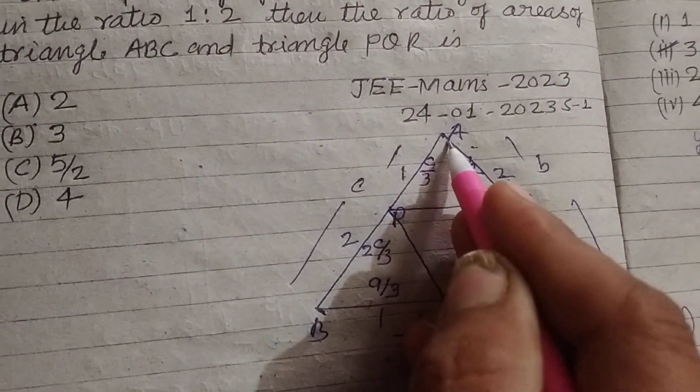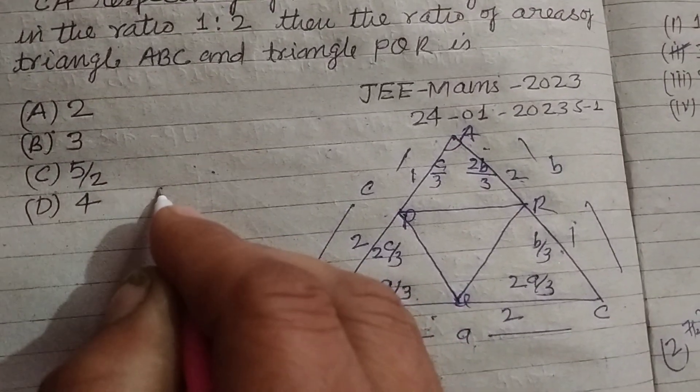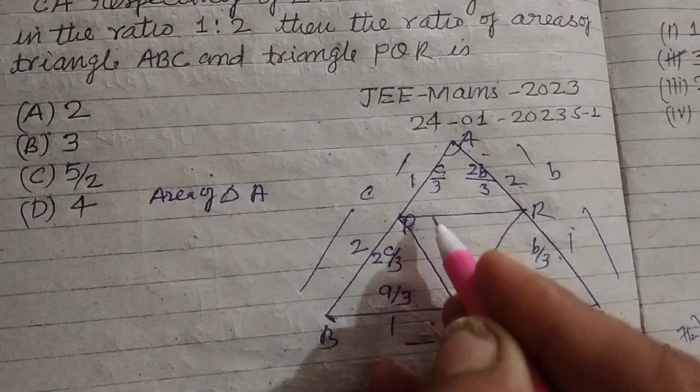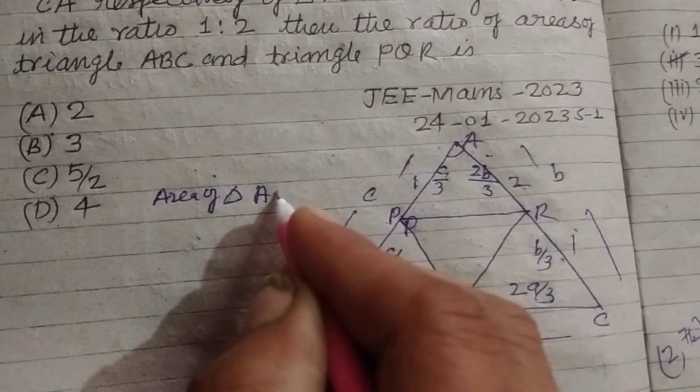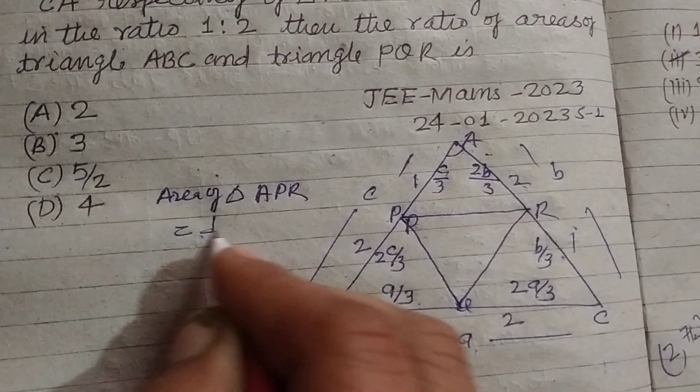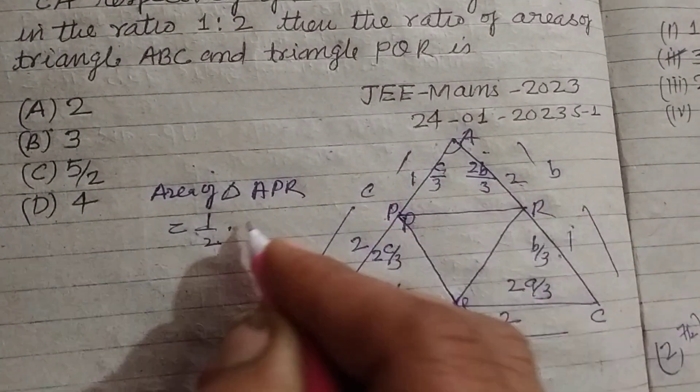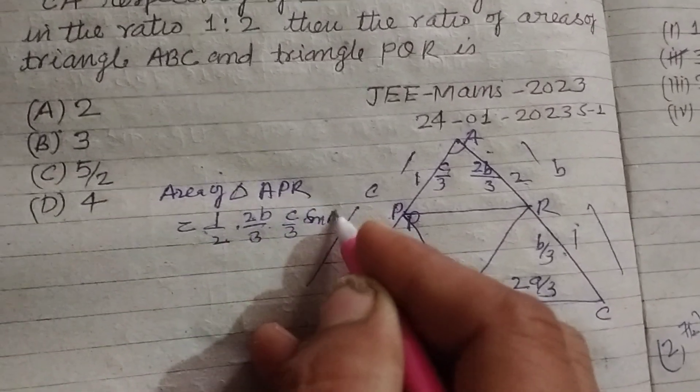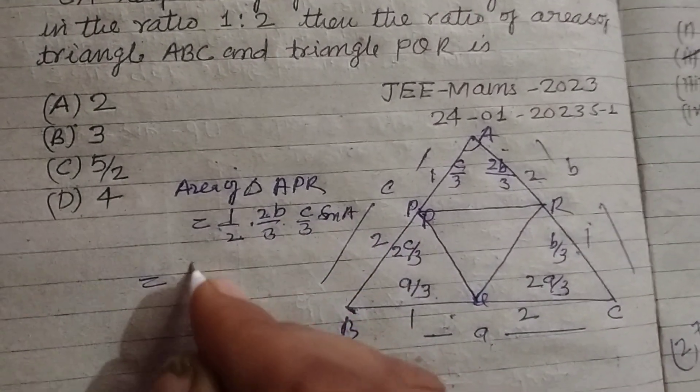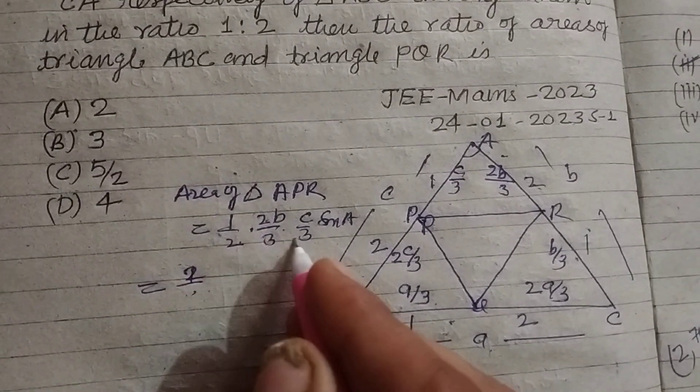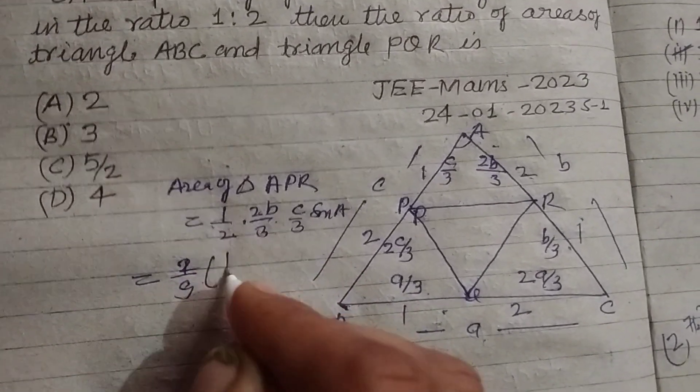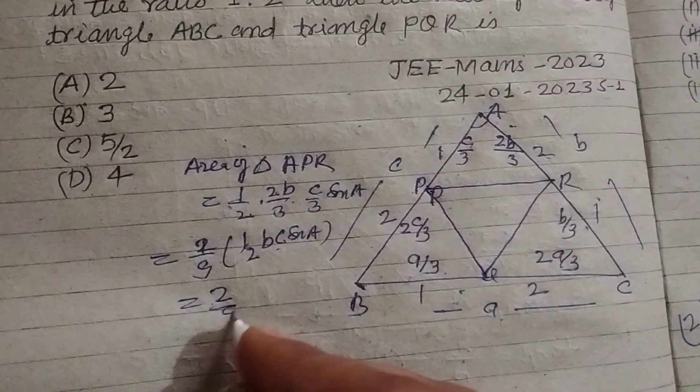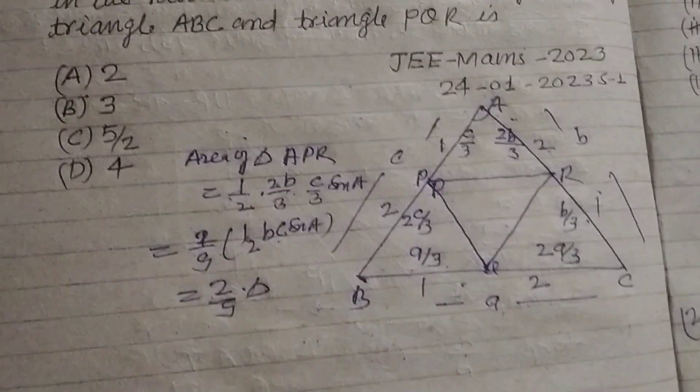If we find the area of triangle APR, it is 1/2 times BC, where the segments are 2B/3 and C/3, sin A. This equals 2/9 times 1/2 BC sin A. Let this be A1.